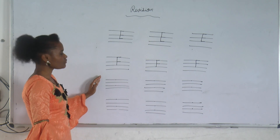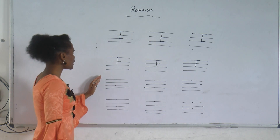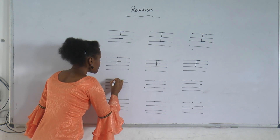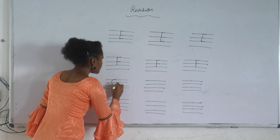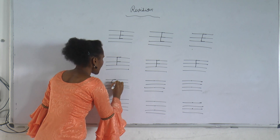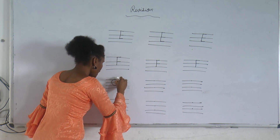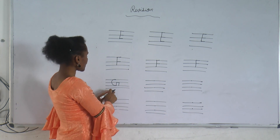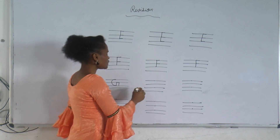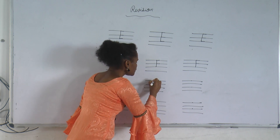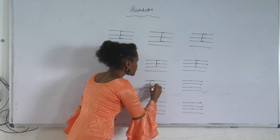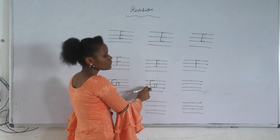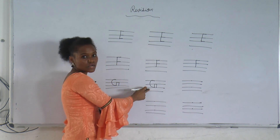Next letter is G. G for grapes. How to write G: first you have to make a big curve, then standing line, sleeping line, standing line. This is G. G for goat. Once again I am showing: big curve, standing line, sleeping line, standing line. G. G for goat.